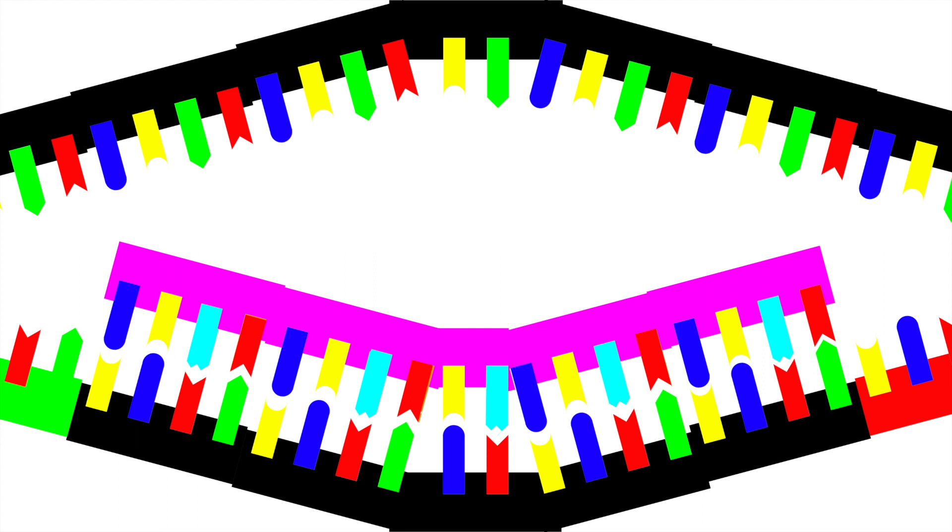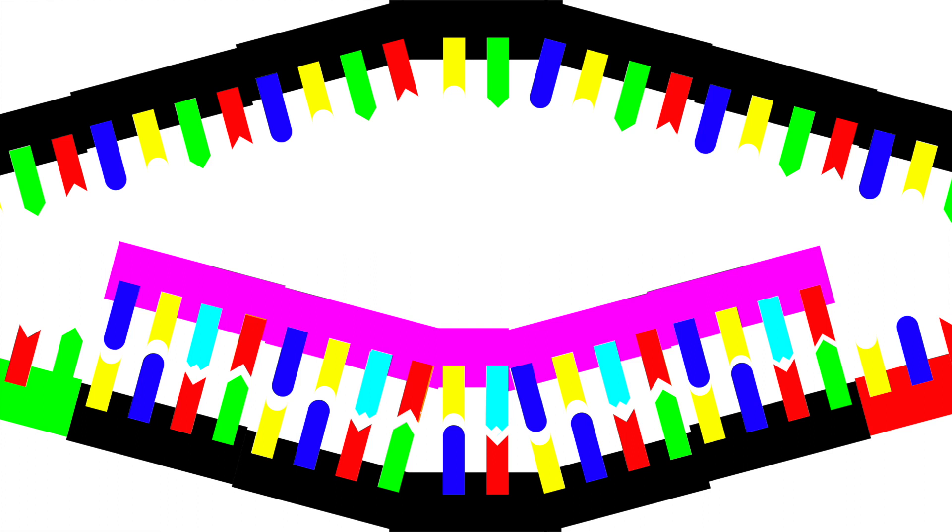Also, a code at the end tells it to stop. Then, it brings the information to a part of the cell called the ribosome. There, little molecules carrying amino acids start bonding to the RNA.